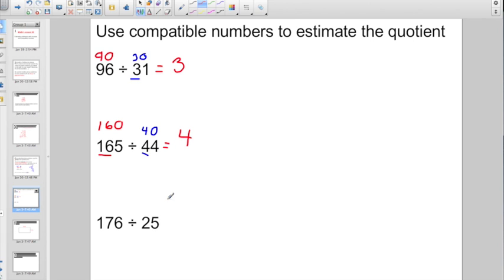And the last one that we're going to do here, let's go ahead and round this divisor of 25. The neighbor to the right is 5 or more, so he rounds up to 30. Take a look. What can I round 176 to that'll divide evenly by 30? Looks to me like the closest number I would have is 180. 180 divided by 30 is going to give us 6.